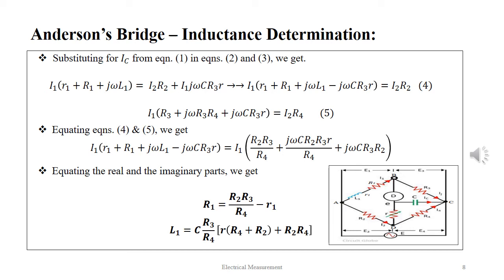Equating equations 4 and 5 we get I1 into small r1 plus capital R1 plus J omega L1 minus J omega C R3 r equal to I1 into R2 R3 by R4 plus J omega C R2 R3 r by R4 plus J omega C R3 R2.